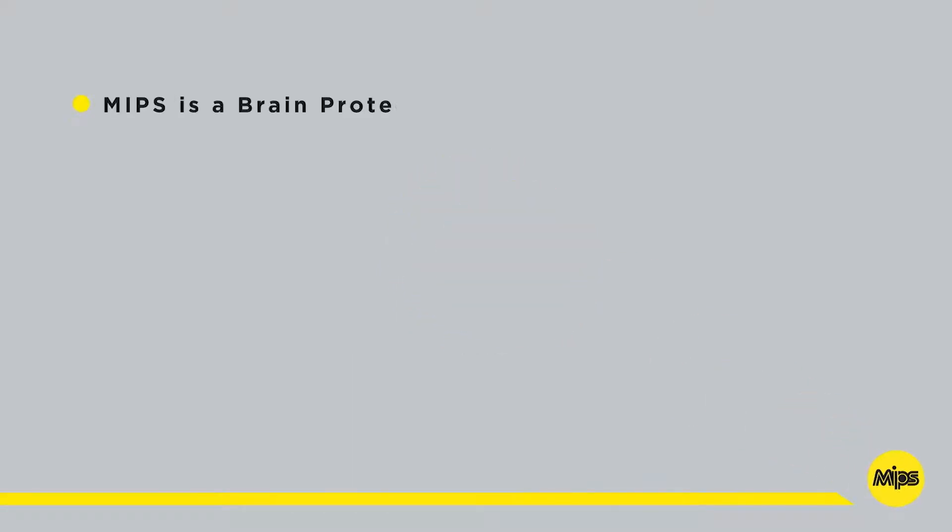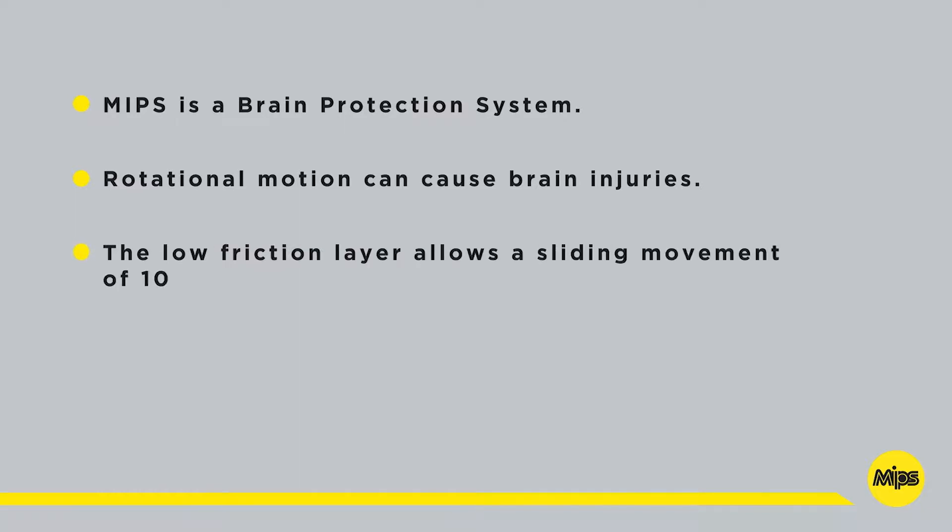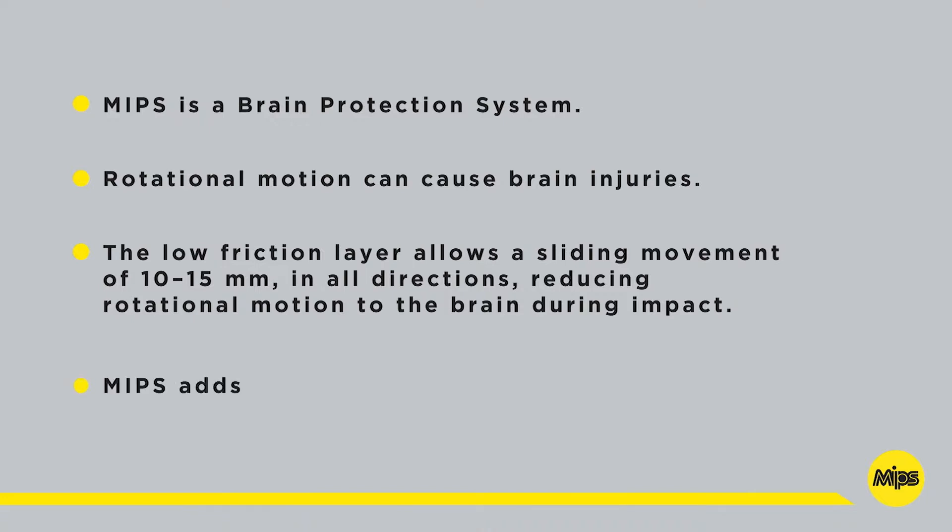MIPS is a brain protection system. Rotational motion can cause brain injuries. The low friction layer allows a sliding movement of 10 to 15 millimeters in all directions reducing rotational motion to the brain during impact. MIPS adds protection.